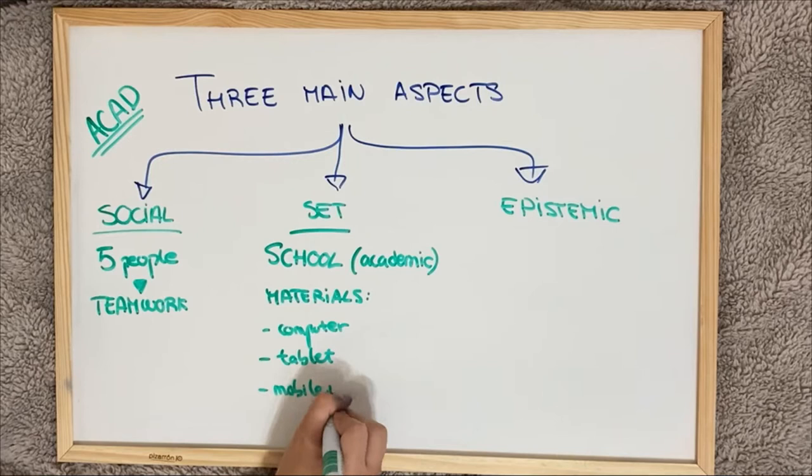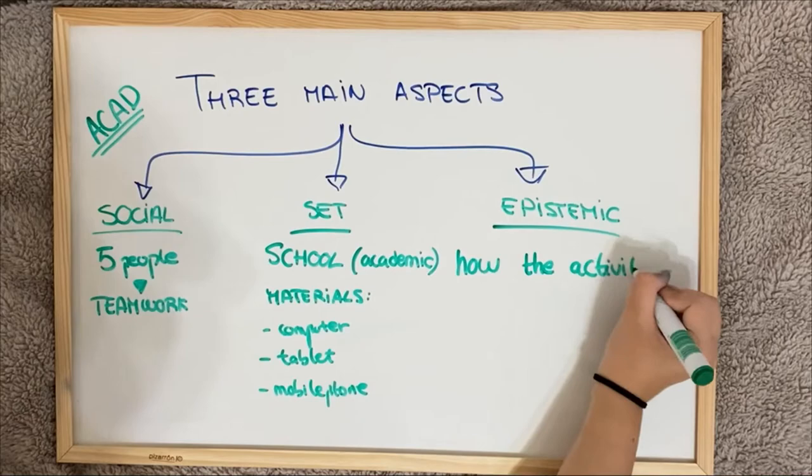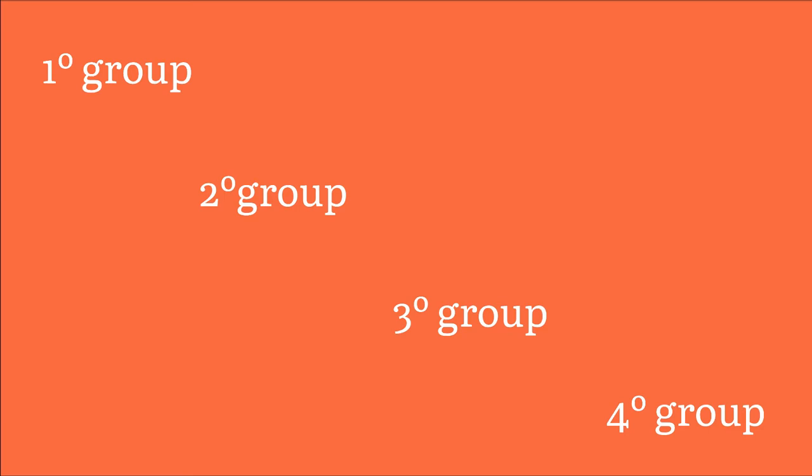The epistemic design is the most important part as it is about how the activity works. The activity is designed for four groups of students who will do the three activities on a rotating basis. The teacher will choose a group that needs a little more help, in this case, group 4.